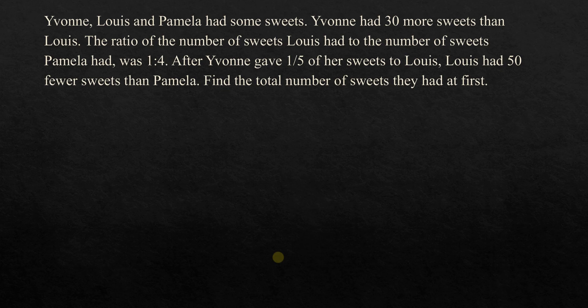Hi everyone. Let's go straight to the question here. This was contributed by one of our viewers. Yvonne, Louis and Pamela had some sweets. Yvonne had 30 more sweets than Louis. The ratio of the number of sweets Louis had to the number of sweets Pamela had was 1 to 4. After Yvonne gave one-fifth of her sweets to Louis, Louis had 50 fewer sweets than Pamela. Find the total number of sweets they had at first.